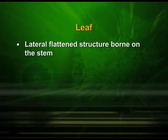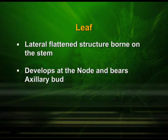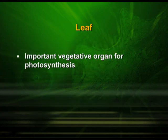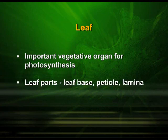The leaf is the lateral flattened structure borne on the stem. It is attached to the stem by a stalk known as the petiole. It develops at the node and bears an axillary bud. It originates from shoot apical meristem and is arranged in acropetal order. Leaves are the important vegetative organs for photosynthesis. The leaf is generally made up of three parts: the leaf base, petiole, and lamina.